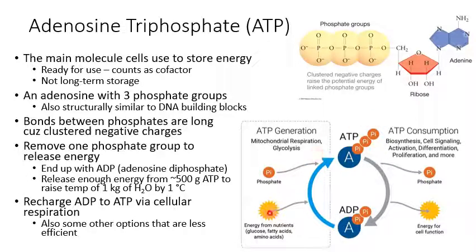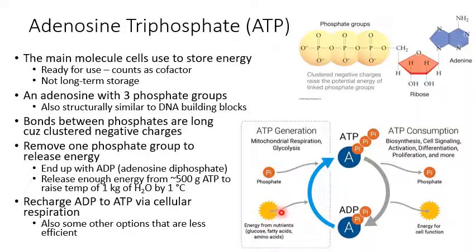In order to add that phosphate group back onto the ADP and get ATP back, you have to put in energy. Different organisms get that energy from different sources — plants get it from light, while mammals get it from a food molecule like glucose. The process of cellular respiration is the process cells use to get energy out of glucose and use it to attach free phosphate onto ADP, giving them ATP back. There are other ways cells can do that too, but none are quite as efficient as cellular respiration.